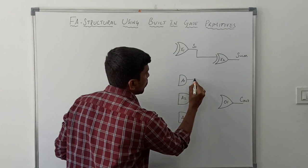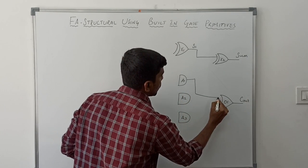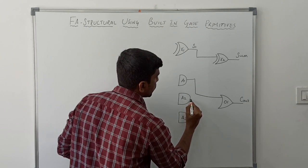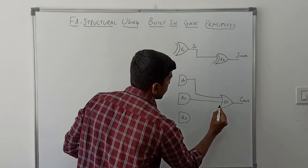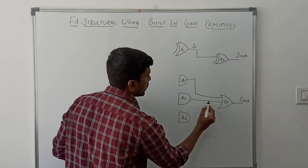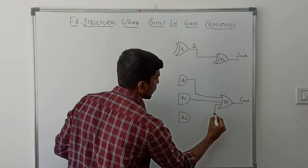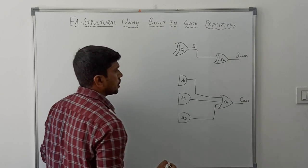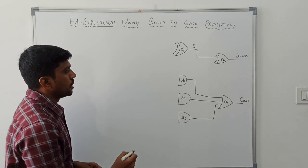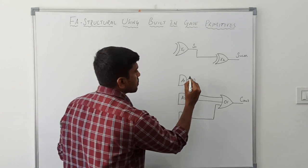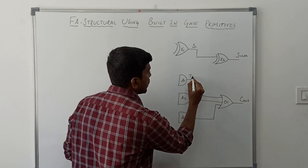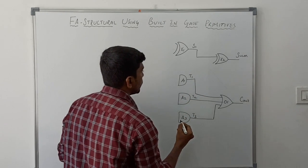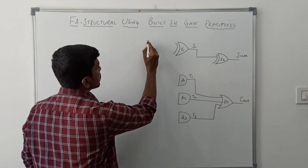The output of the first AND gate is connected to the input of the first XOR gate. The second output is connected to the second input of the OR gate, and the third AND gate is connected to the third input of the OR gate. These wires are named t1, t2, and t3.